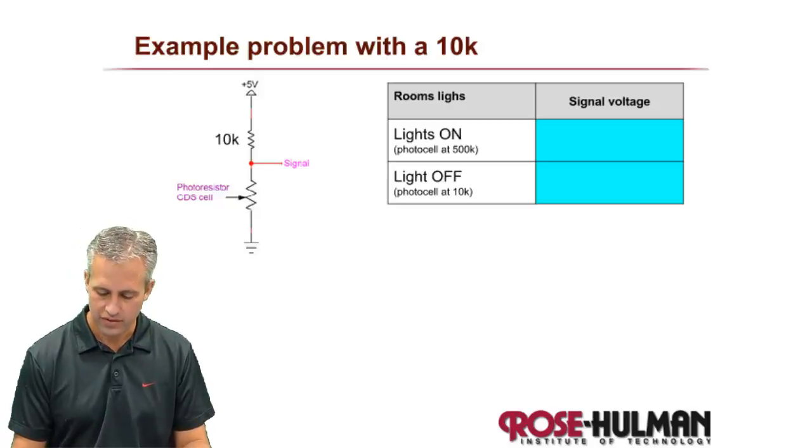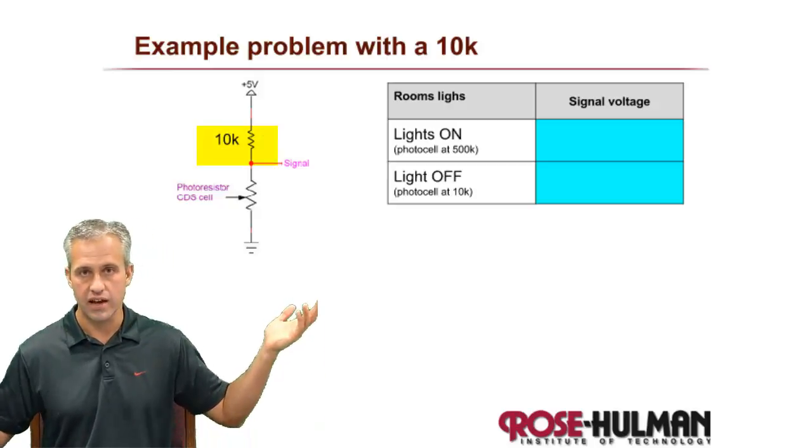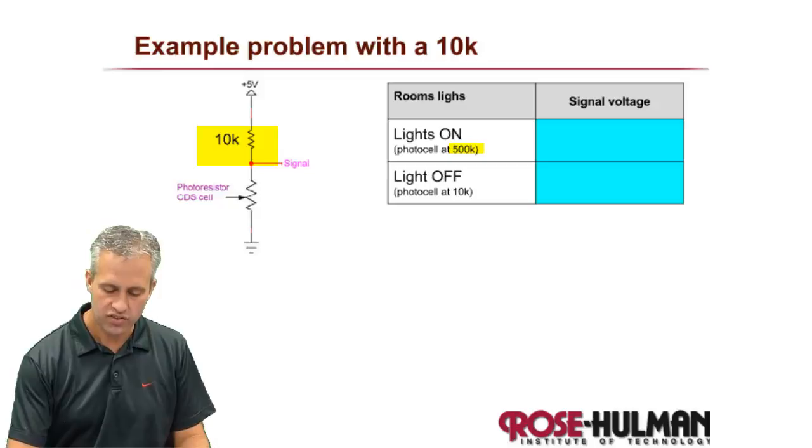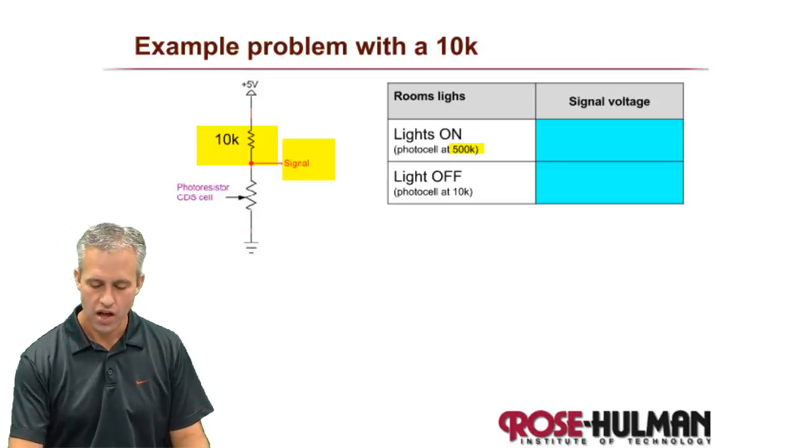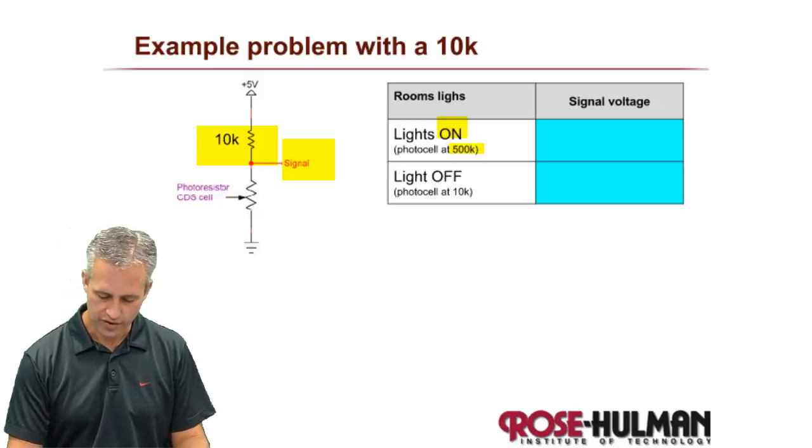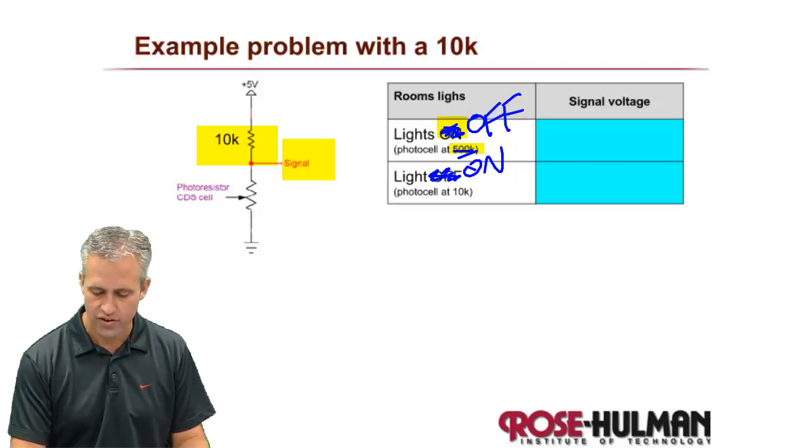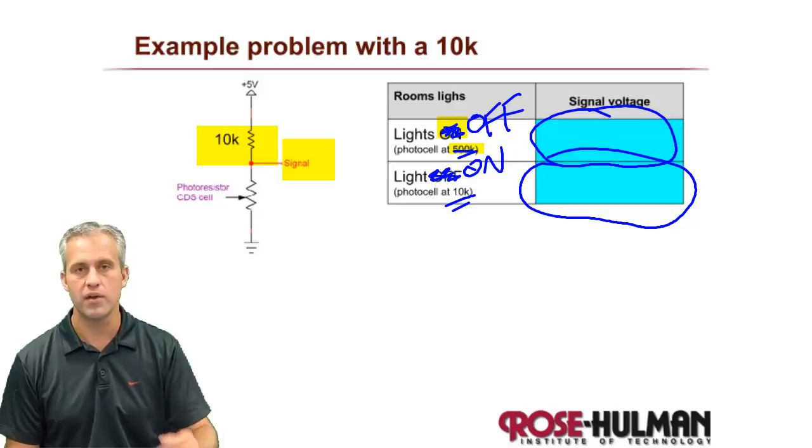So let's let you do some math yourself. Let's say that you pick 10k. That's a good ballpark number. What would you expect to see as the signal? Like, what would you expect the voltage to be when the lights are on? Oh shoot, I've got that backwards. Let's switch this. Let's say lights off. So whenever it's dark, the number is higher. And then we'll say lights on. Sorry, if the lights are off and it's at 500k, what would you expect that signal to be? And if the lights are on and it dropped down to 10k, what would you expect that signal to be? I'll give you a minute to work the problem.